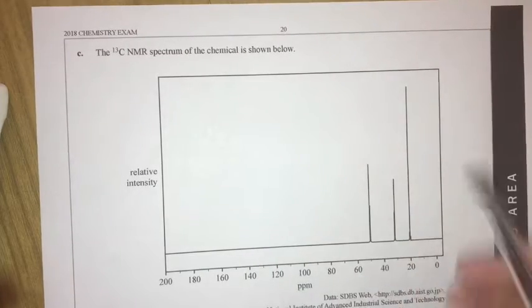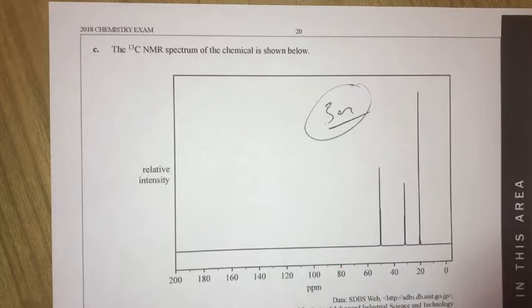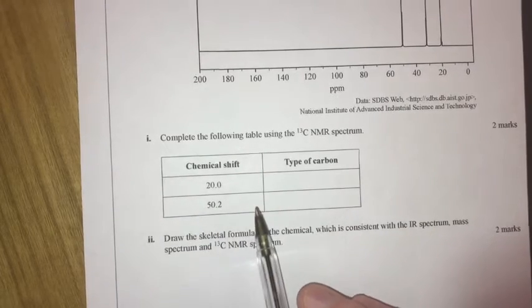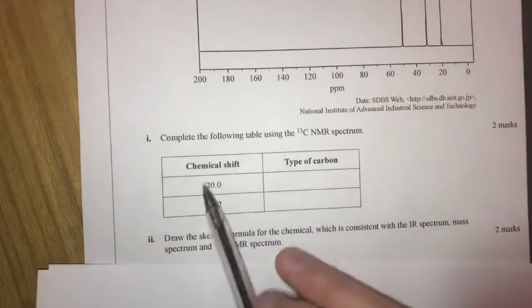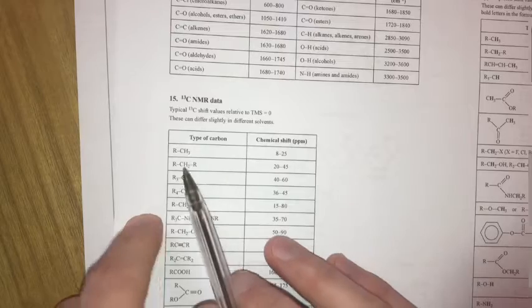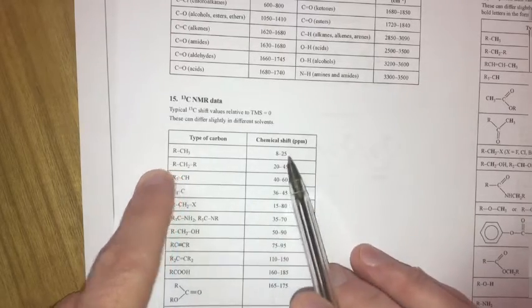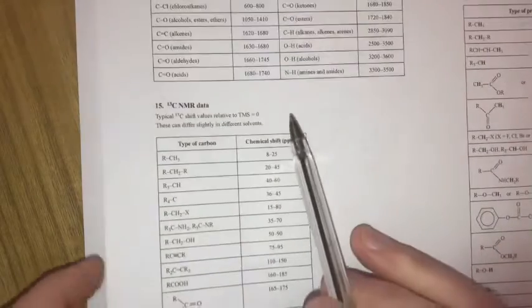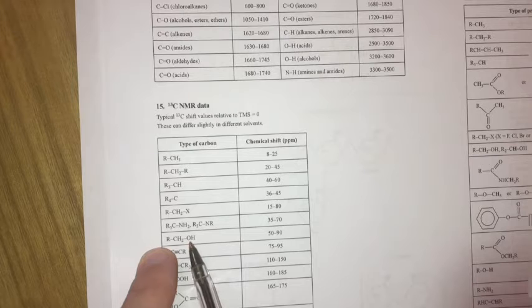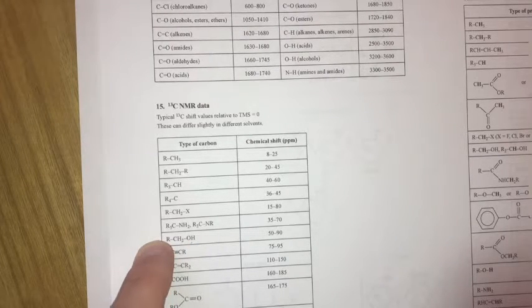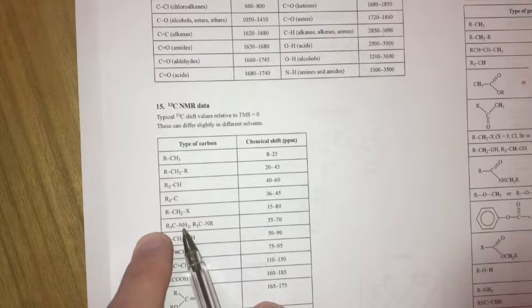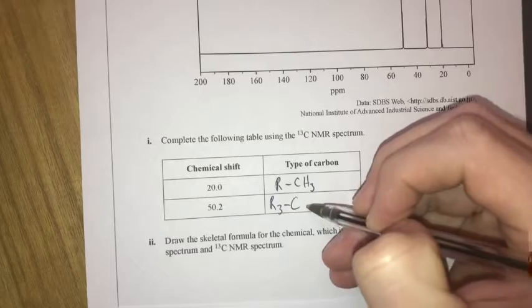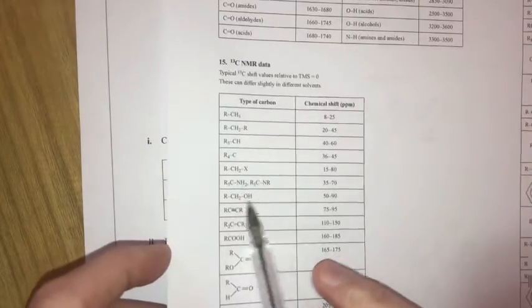For carbon NMR, we have three environments for four carbons, which means there's symmetry involved. Completing the table: a chemical shift around 20 corresponds to RCH3 straight from the data booklet. The peak at 50.2 falls in the 35–70 range — not an O–H (we have no oxygen), but an N–H2, so it's a carbon bonded to NH2, written as R–CH–NH2 type.